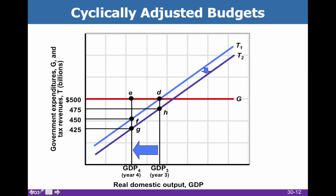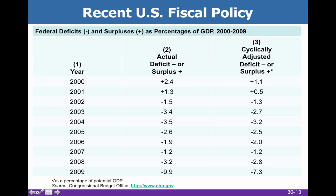If we lower taxes, a deficit that was this big becomes even bigger. That would obviously be a very expansionary thing, but we might want to do this in order to get ourselves out of a recession — that might make a lot of sense. You can pause and take a look at the difference between actual and cyclically adjusted budgets.